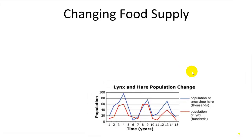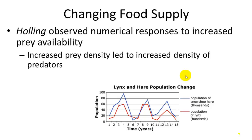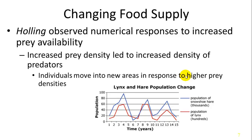Another cause of changes in distributions is changes in food supply. Hawley observed numerical responses to increased prey availability — increased prey density led to increased density of predators. If there are plenty of resources and prey, that can support more predators, and individuals would move into new areas in response to higher prey densities. This is similar to researchers who looked at populations of lynx and hare and found them very linked: as prey density increased, so did the predator in response.